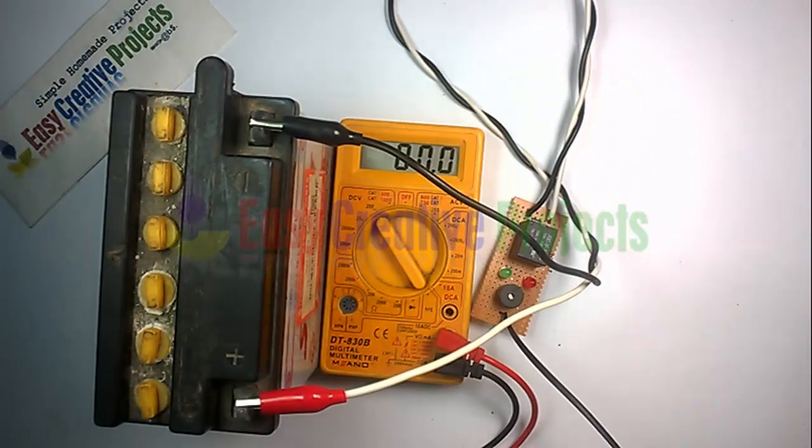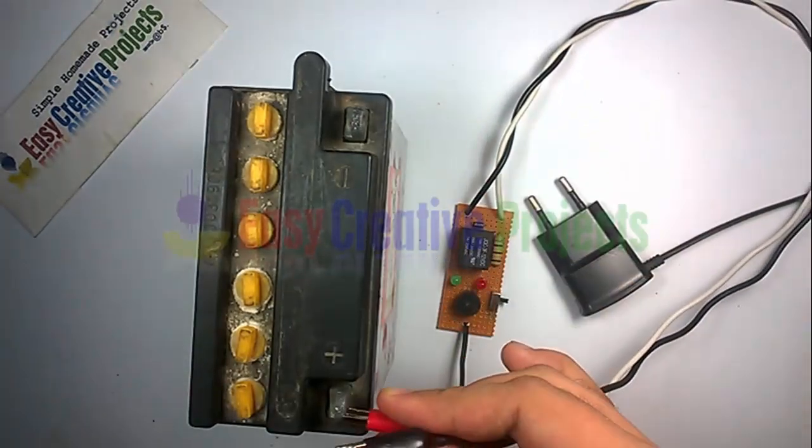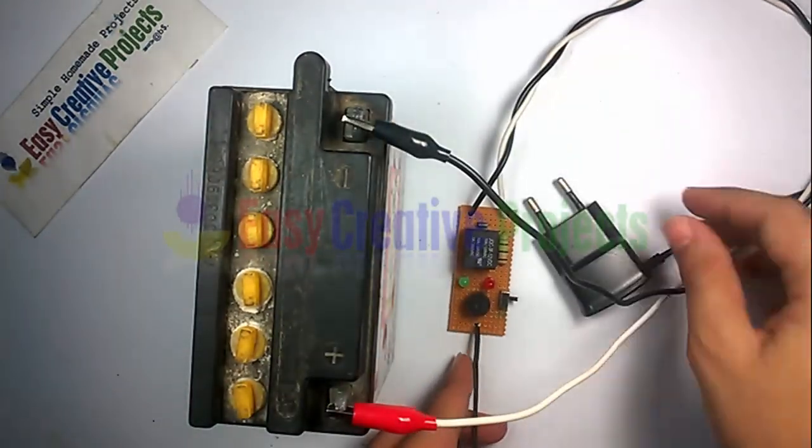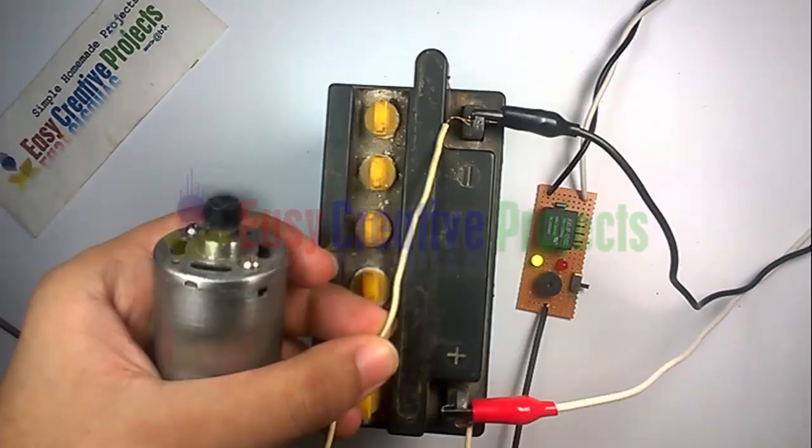Now we charge the battery for 15 minutes and connect the circuit with the battery. You can see this time the green light is on. Now we use the battery with a motor.